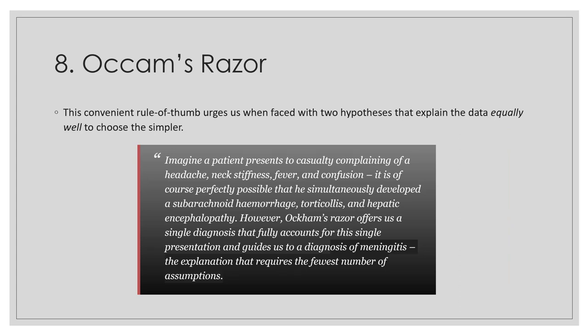Beware of Occam's razor — a convenient rule of thumb that urges us, when faced with two hypotheses that explain the data equally well, to choose the simpler hypothesis. So if you have a patient complaining of headache, neck stiffness, fever, and confusion, it's perfectly possible that they simultaneously developed a subarachnoid hemorrhage, torticollis, and hepatic encephalopathy. However, Occam's razor offers us a single diagnosis that fully accounts for this presentation and guides us to a diagnosis of meningitis. That explanation requires the fewest number of assumptions and is more likely the correct outcome.